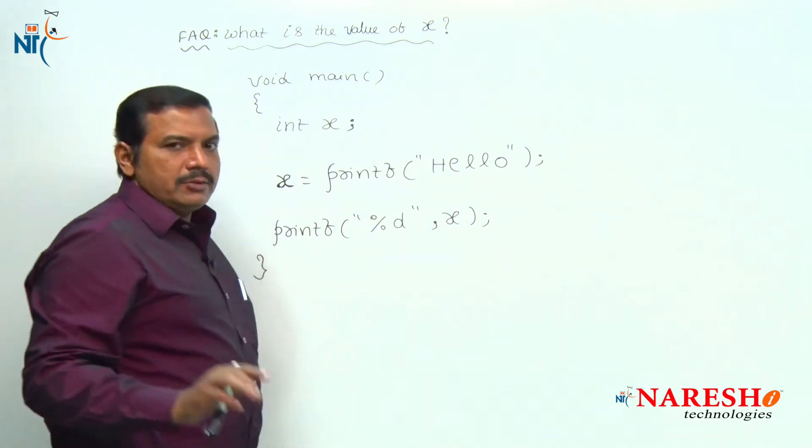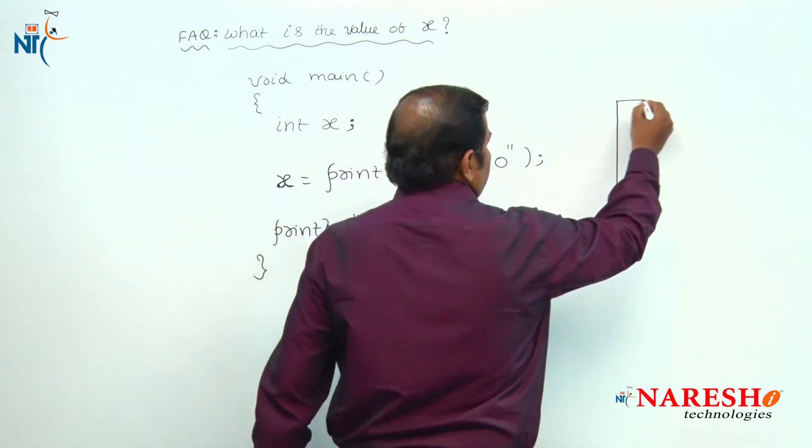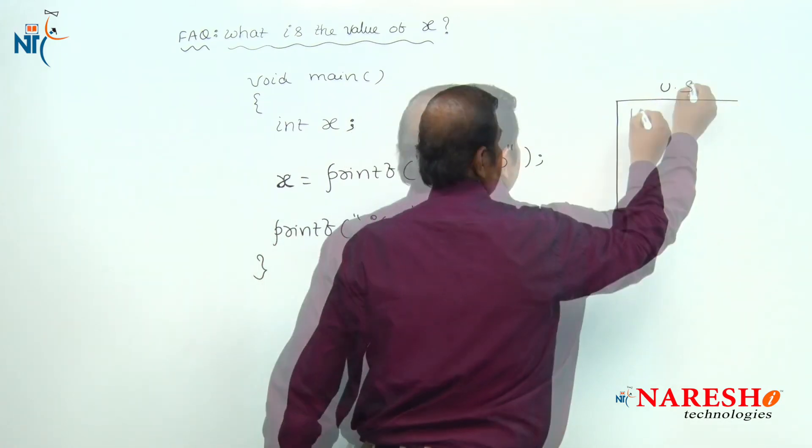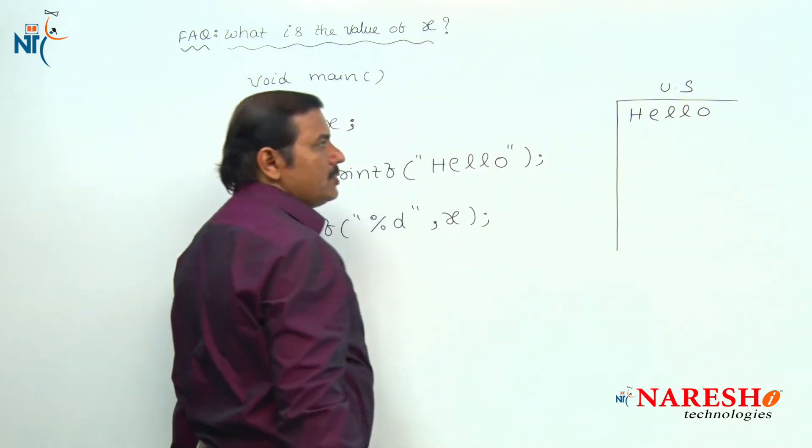When the statement executes, the printf prints the characters which are enclosed within double quotes as it is onto the screen.